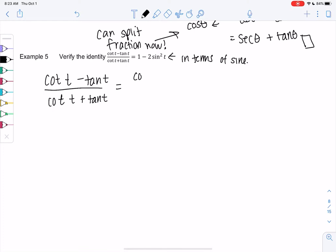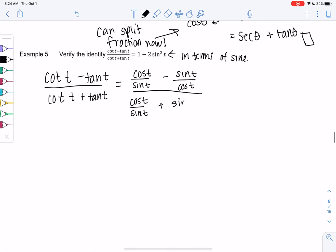So we will do cosine over sine for cotangent minus sine over cosine for tangent, over cosine over sine plus tangent. In terms of sine and cosine can be often useful. I'm going to do LCD, which would be just sine times cosine.